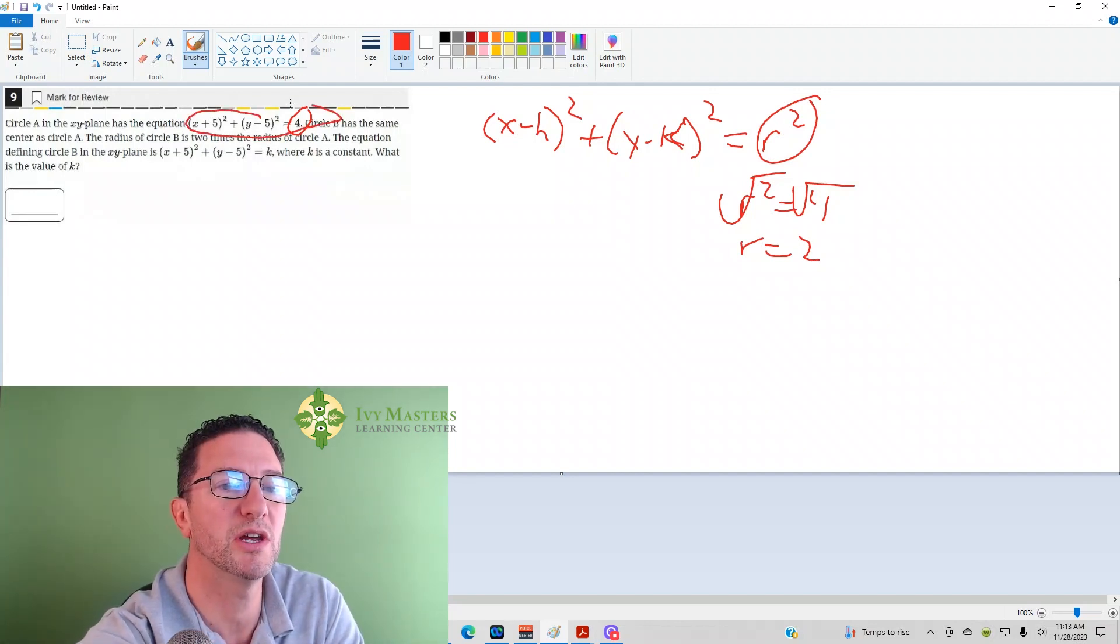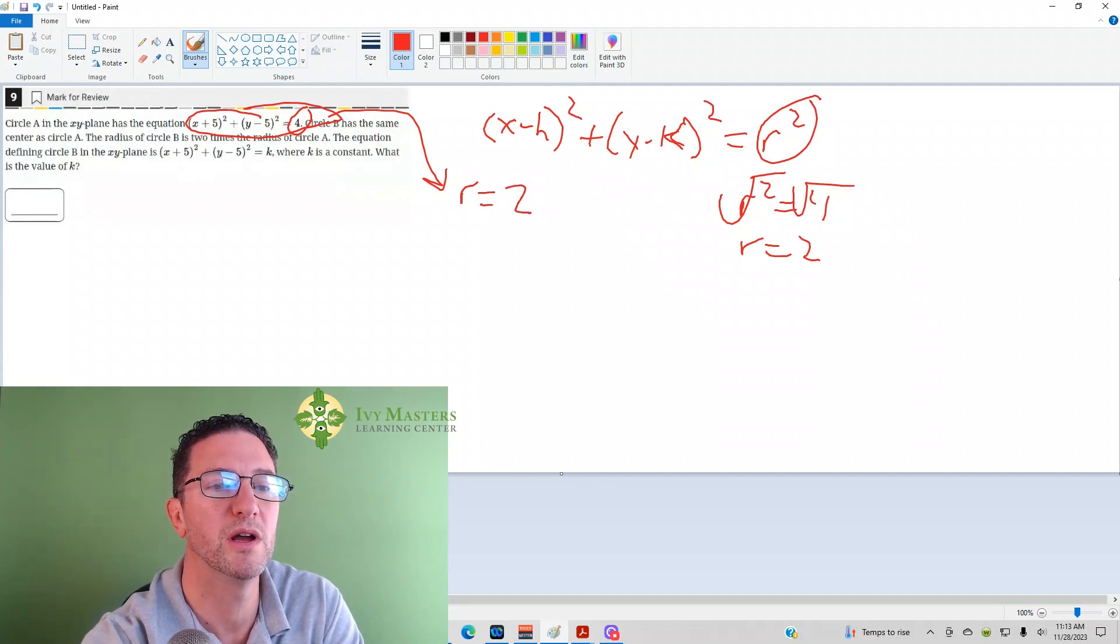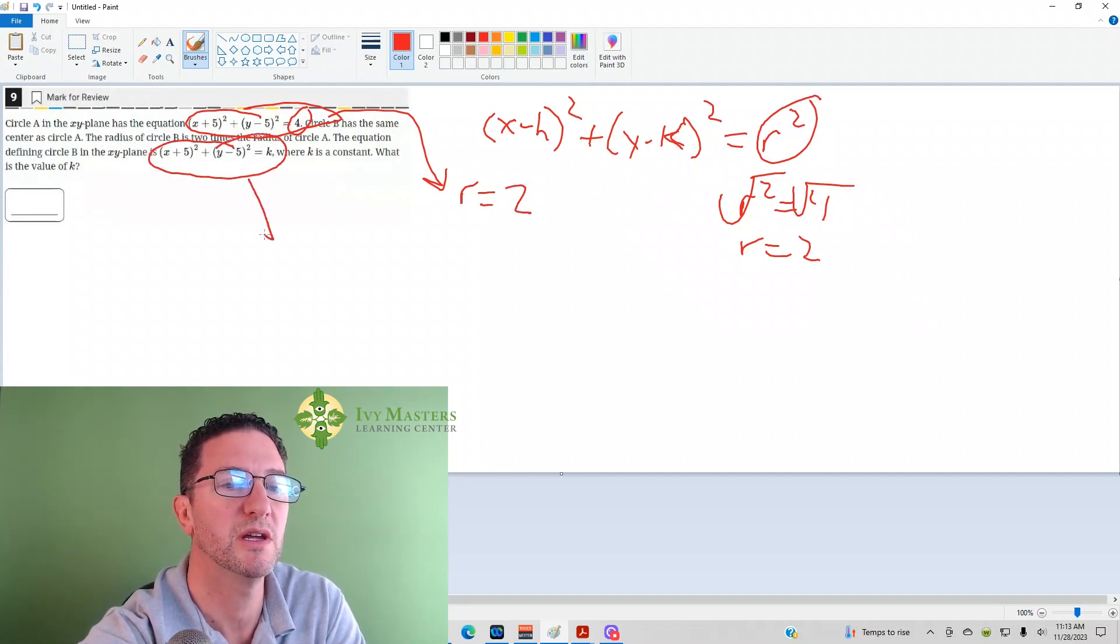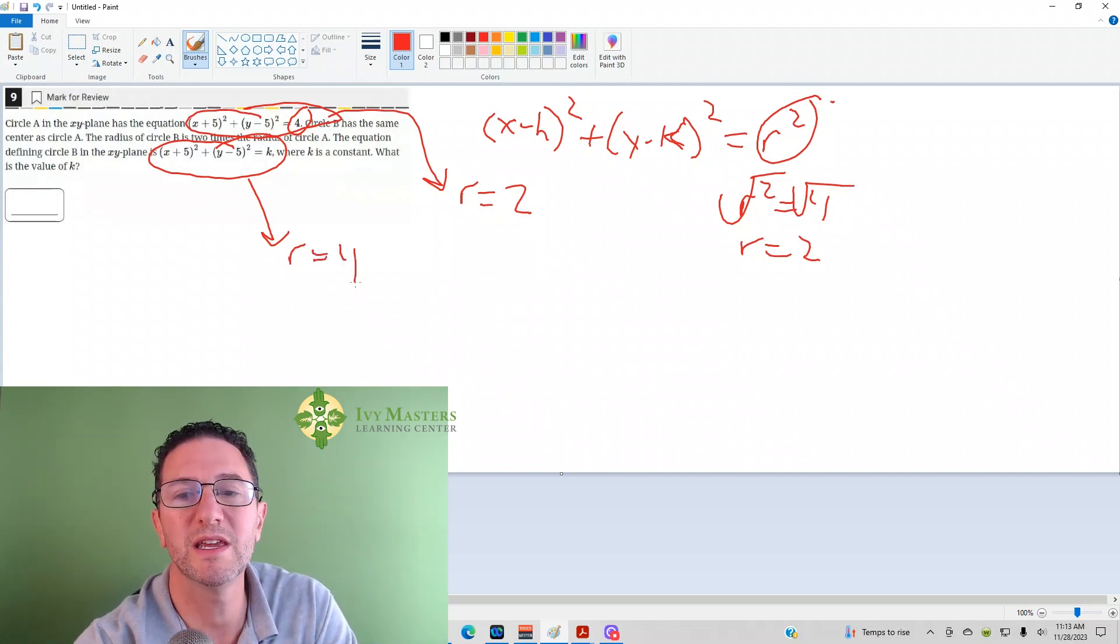Which means this equation has a radius of 4, and once again, since r² is isolated on the right,